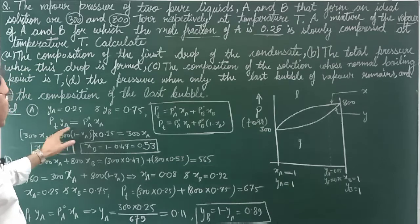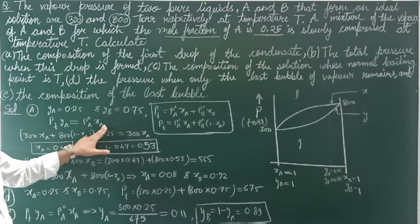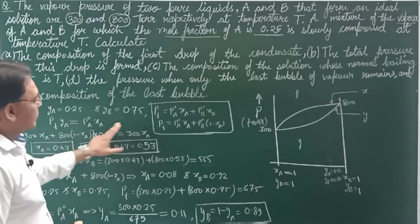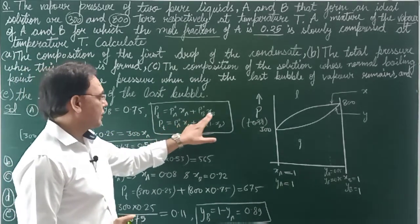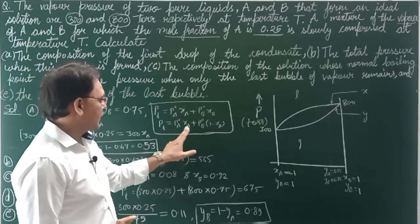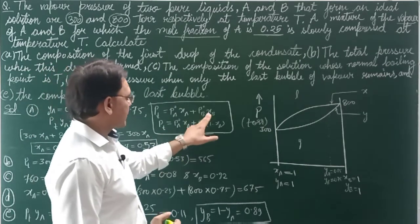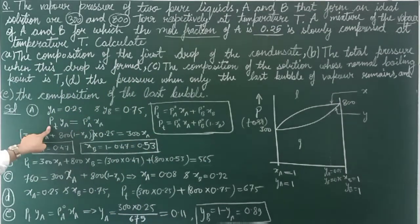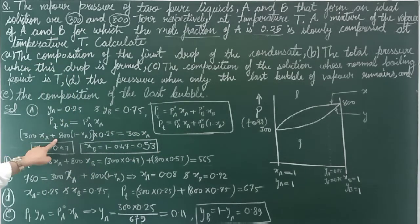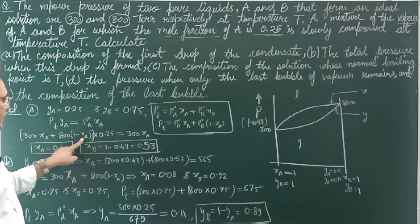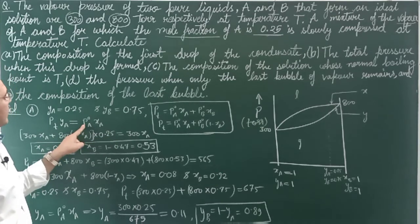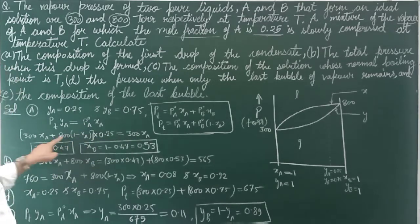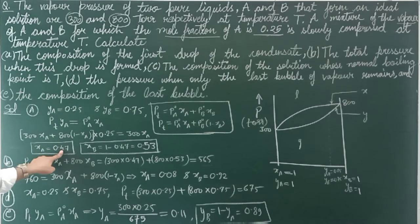P_total × y_A = P°_A × x_A — you must have studied this. P_total = P°_A × x_A + P°_B × x_B, and substituting x_B = 1 – x_A. So P_total = 300·x_A + 800·(1 – x_A). y_A was given as 0.25, equal to 300·x_A divided by P_total. Solving for x_A gives 0.47.